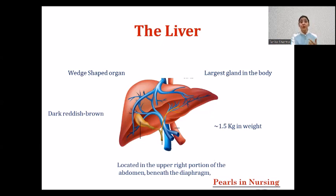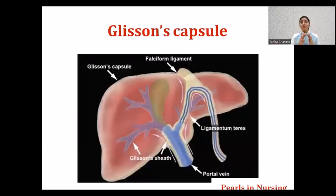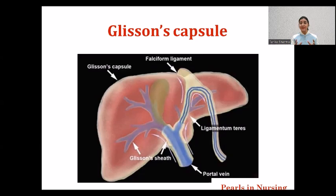The liver is located in the upper right portion of the abdomen, beneath the diaphragm. It is covered by a membrane known as Glisson's capsule. Just as the heart is covered by the pericardium and the lungs are covered by the pleura, the liver is covered by Glisson's capsule, which is a part of the visceral peritoneum.